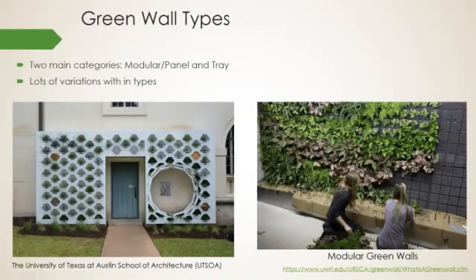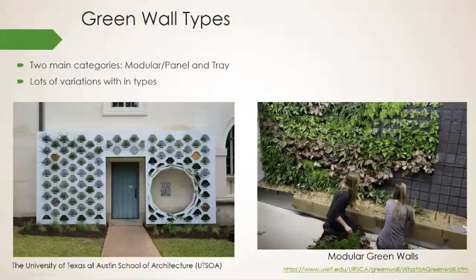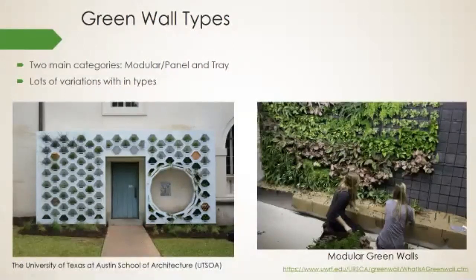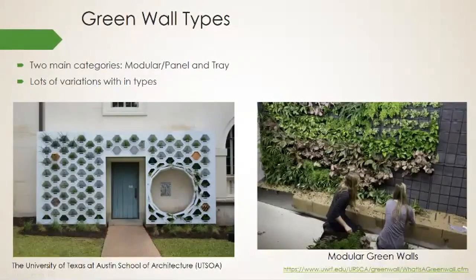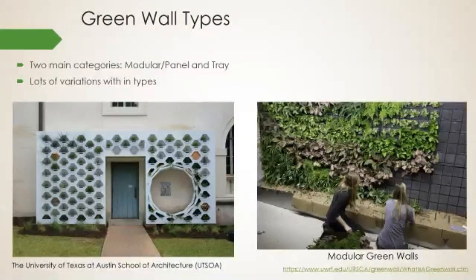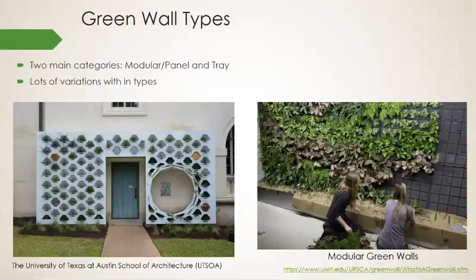The SIUC green wall is a panel type. At what I believe is the University of Wisconsin in Madison, there's a modular type using a felt or textile pocket blanket to install the plants. The SIUC green wall can be thought of as a hydroponic system because the plants aren't growing in a soil media — it's a soilless medium there just to hold the roots in place so irrigation water with fertilizer drains down through the mat and roots intercept those nutrients.